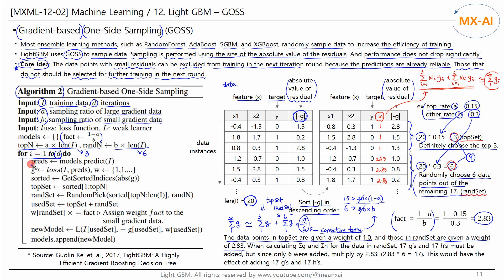PREDS is the prediction from the previous iteration round. G is the residual, which is the first-order gradient. Initialize the weights to 1.0. Next, sort the absolute values of the residuals in descending order. Construct the top set with the top N data points with large residuals. Then construct the RAND set by sampling RAND N data points from the subset with small residuals — in the example, 6 out of 17 data points. Then combine the top set and RAND set.